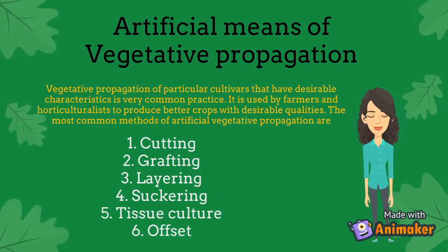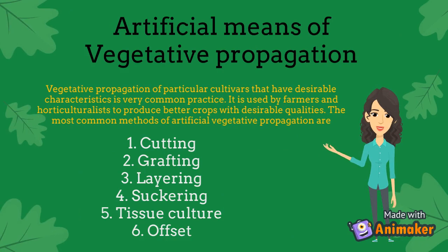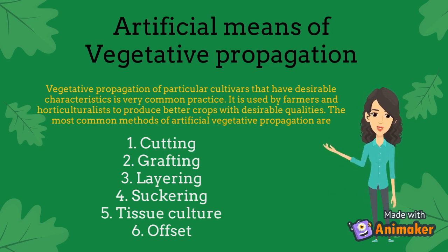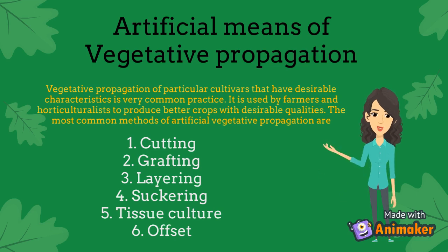Artificial means of vegetative propagation: vegetative propagation of particular cultivars that have desirable characteristics is very common practice. It is used by farmers and horticulturalists to produce better crops with desirable qualities. The most common methods of artificial vegetative propagation are: